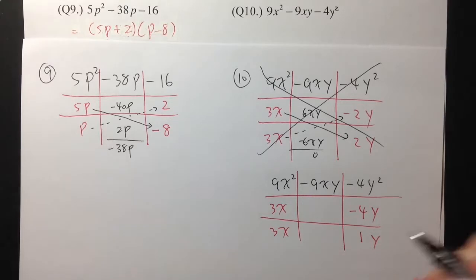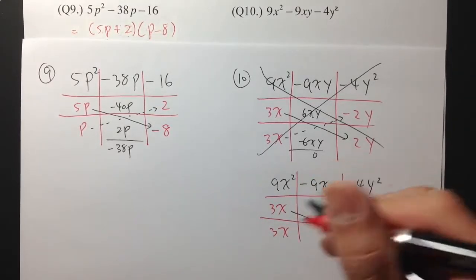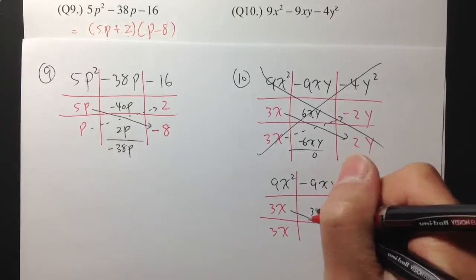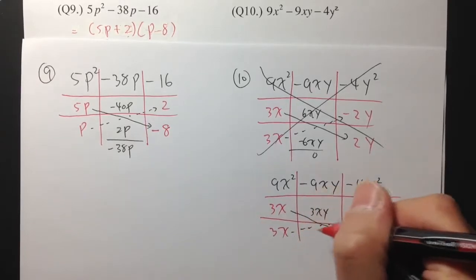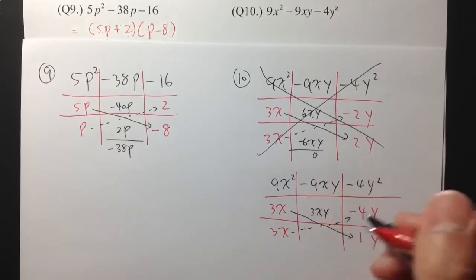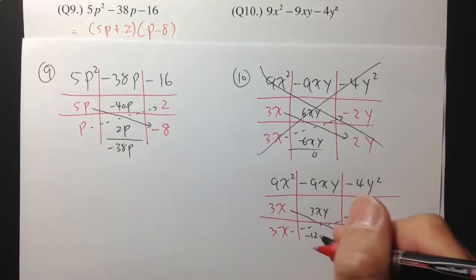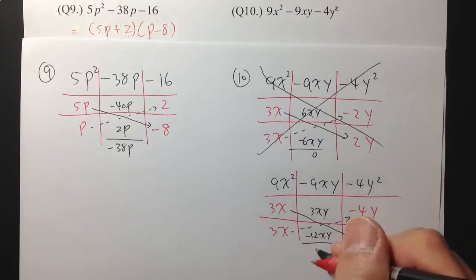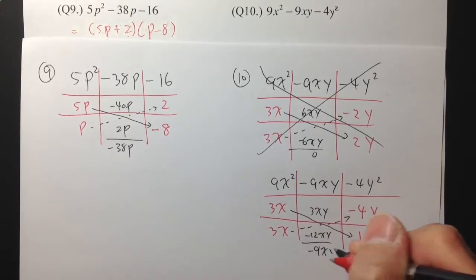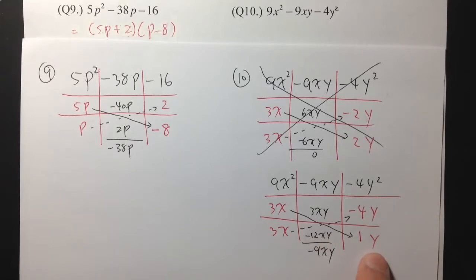And then let's see. I have to take 3x times 1y. I think this time will work because 3x times y is 3xy. And then 3x times negative 4y — 3 times negative 4 is negative 12, and then I'll have the xy. Positive 3xy minus 12xy is exactly negative 9xy, and that's what we need in the middle. So what's the answer? (3x − 4y)(3x + y).